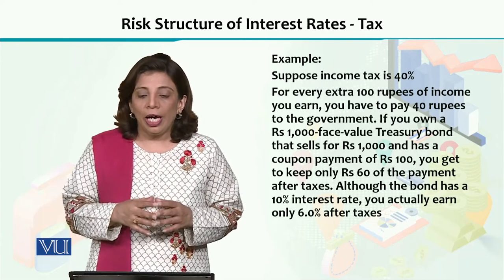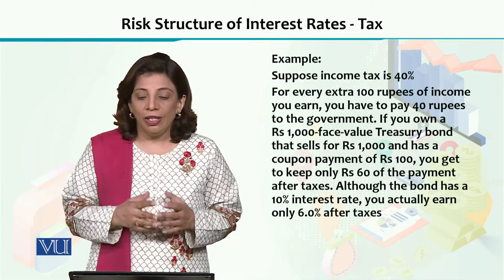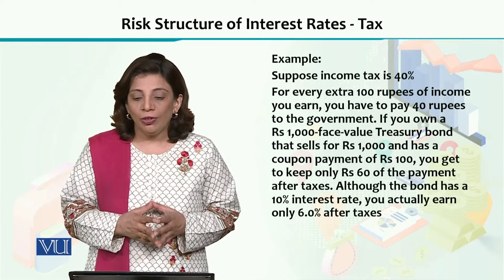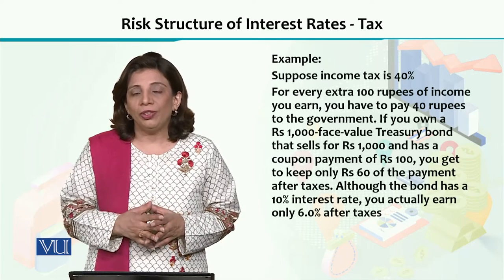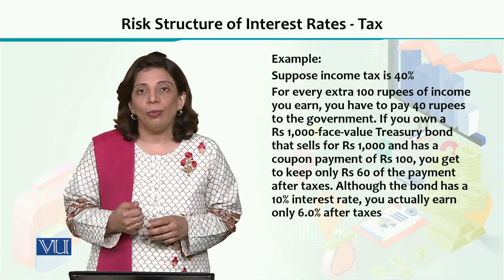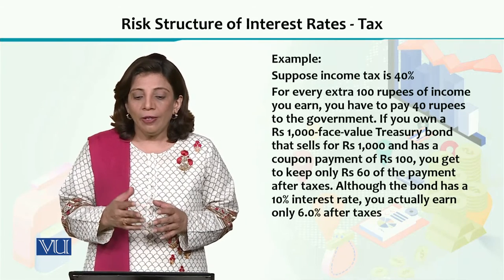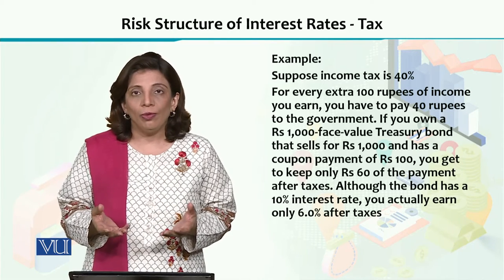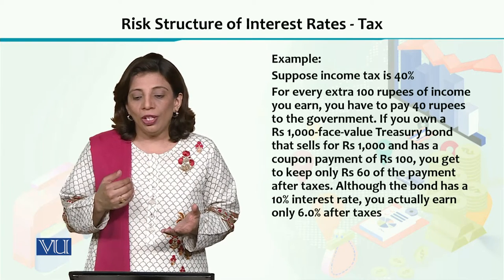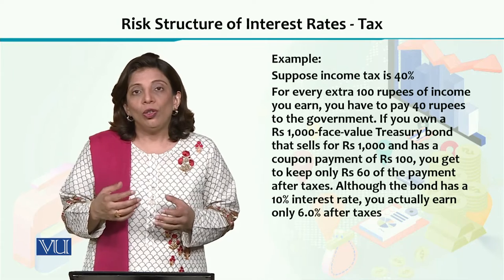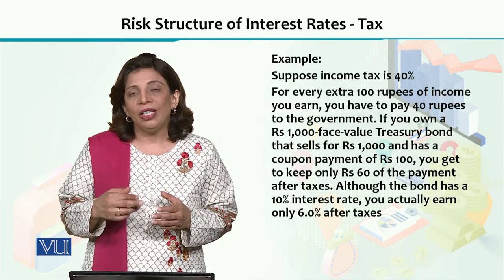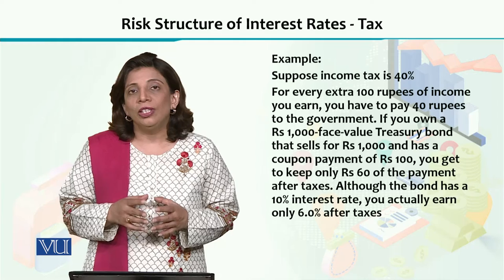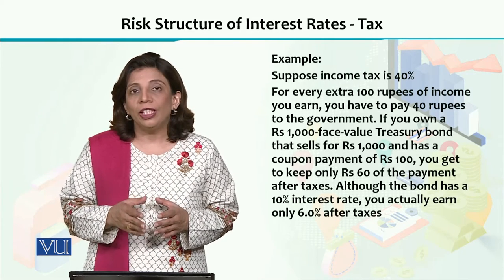We have assumed a face value of 1,000 rupees. When you get the bond after one year, the government has also announced a coupon payment. If the interest rate is 10%, then after paying 40% tax on that interest, you are effectively left with only 6% return — because 40% of the 10% goes to tax.